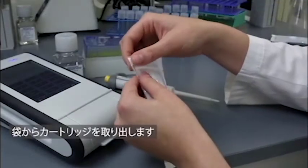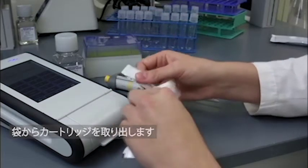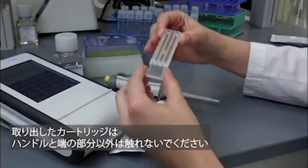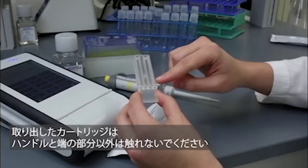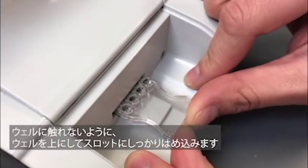Remove your cartridge from its pouch. Take care to touch only the handle or edges of the cartridge. Once the cartridge is fully removed, touch only the handle end of the cartridge, not the sample wells, and place it firmly in the slot of the reader with the wells facing up.